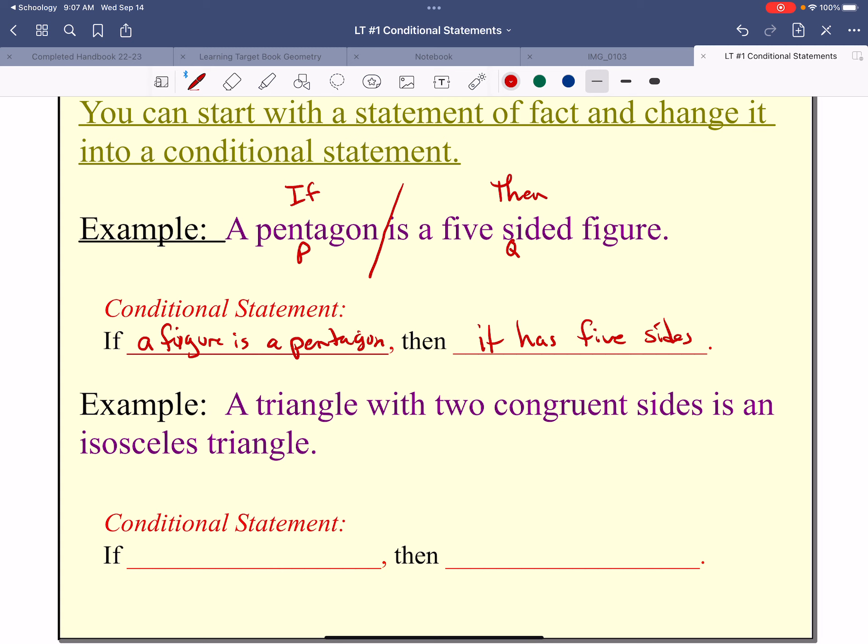So if a figure is a pentagon, then it has five sides. So let's take another statement of fact. A triangle with two congruent sides is an isosceles triangle. Pause the movie, write it as a conditional, press play when you are finished.